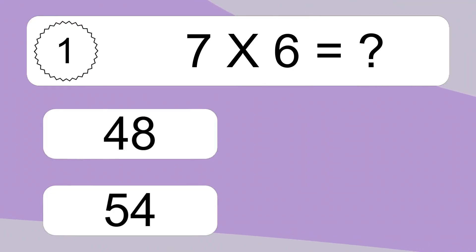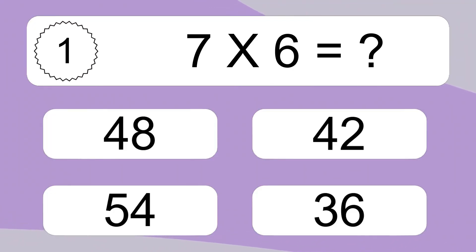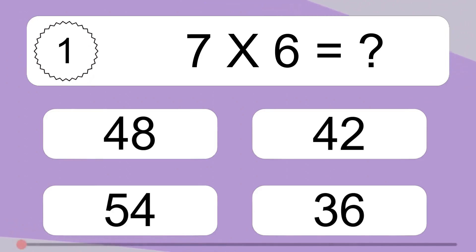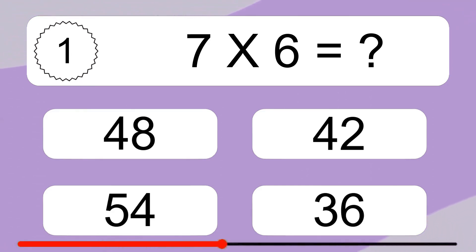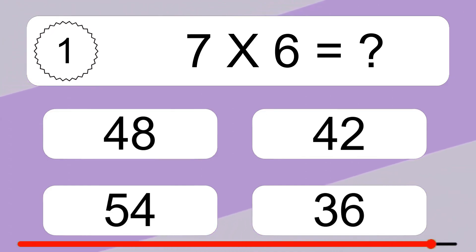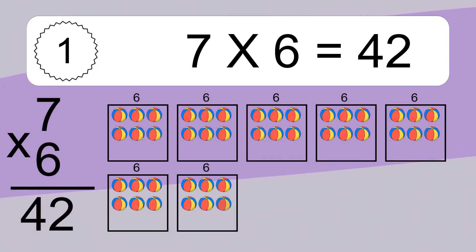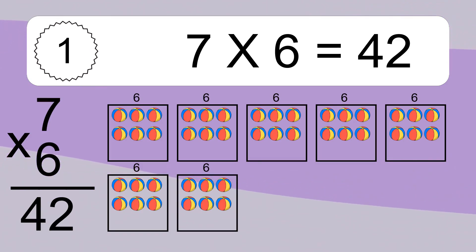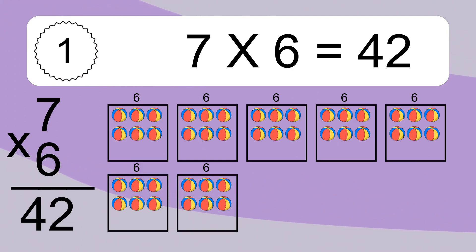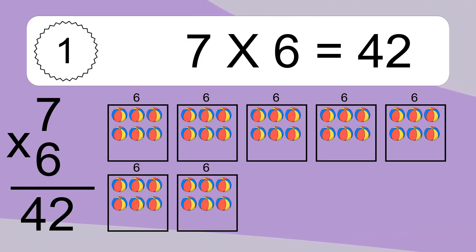7 times 6 equals what? 7 times 6 equals 42. We have 7 boxes, and each box has 6 colorful balls inside. If you count all the balls in all the boxes together, you will have 7 times 6 balls. This equals 42 balls.